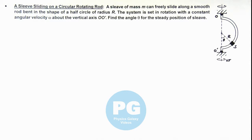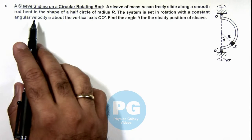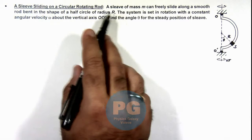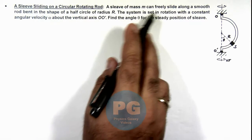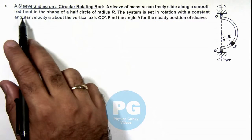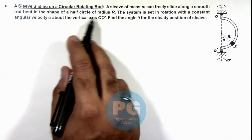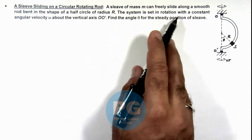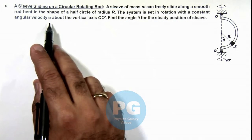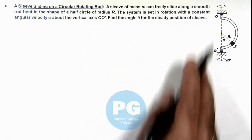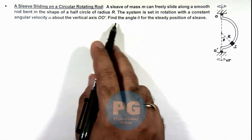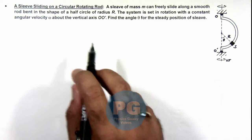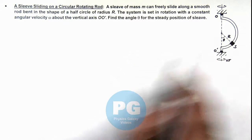In this illustration, we'll see a sleeve sliding on a circular rotating rod. Here we are given that a sleeve of mass m can freely slide along a smooth rod bent in the shape of a half circle of radius R. The system is set in rotation with a constant angular velocity ω about the vertical axis OO'. We are required to find the angle θ for the steady position of the sleeve as it is free to slide along this rod.